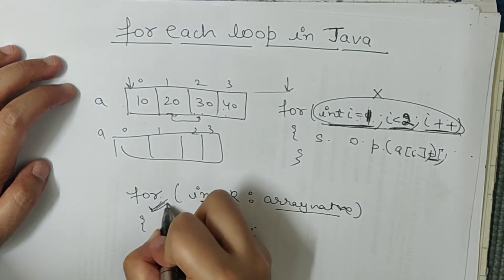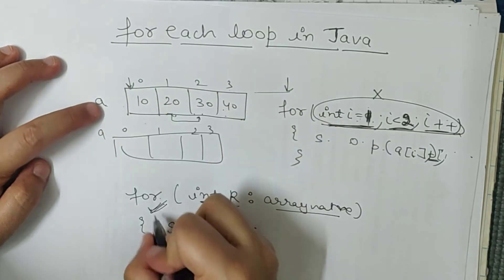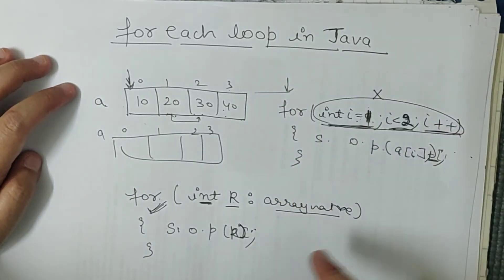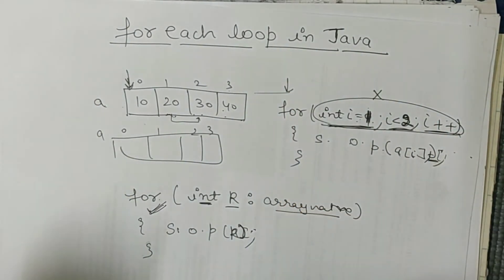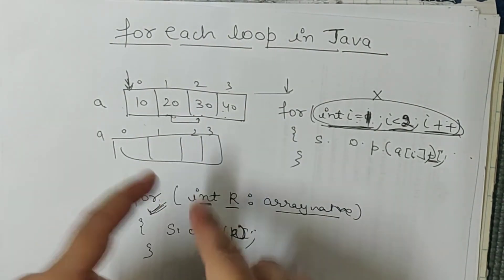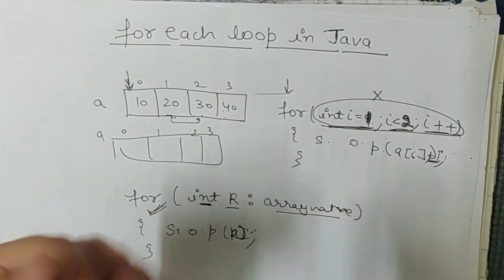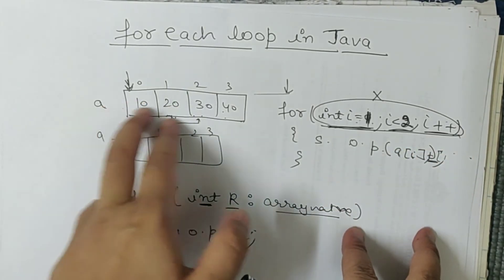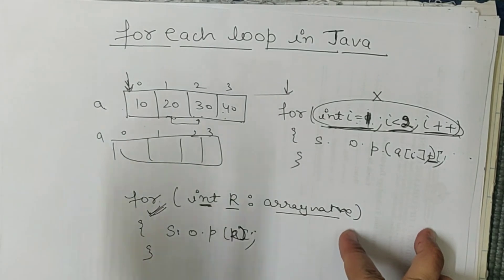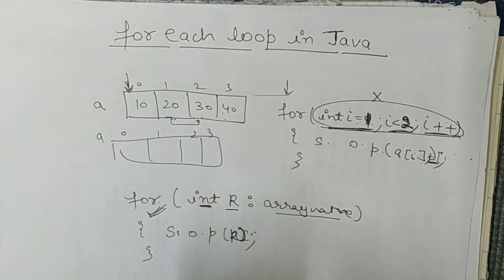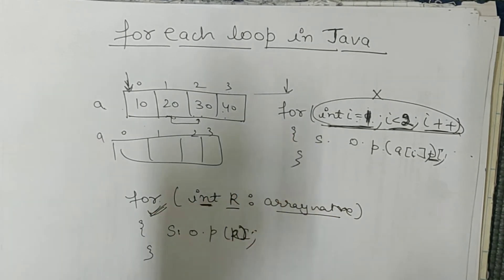Aap yeh nahi kar sakte ki aapko second last element tak hi print karwana hai ya third last element tak — aapko as-is saare ke saare array ko print karna padega in case of for-each loop. Loop chalega tab tak jab array start ho raha hai aur tab tak chalta rahega jab tak array khatam nahi ho jata. For-each loop mein aap sirf print kara sakte ho. Isme user se input bhi nahi le sakte, koi manipulations bhi nahi kar sakte — jaise do numbers add karo ya average nikalo. It is just for printing, aur printing bhi all elements from start till end.